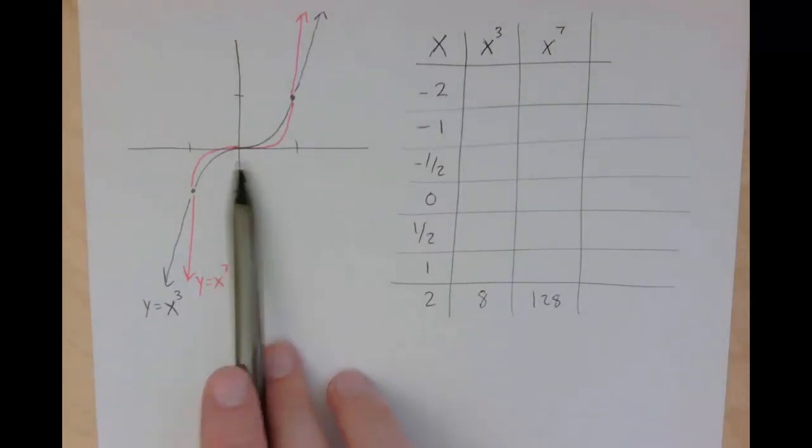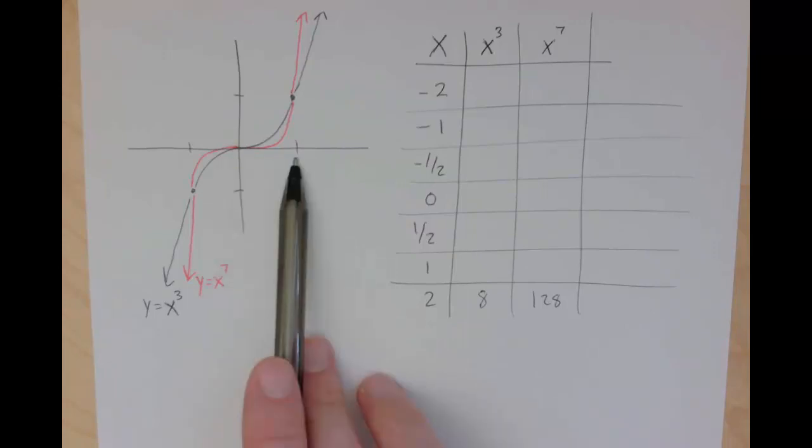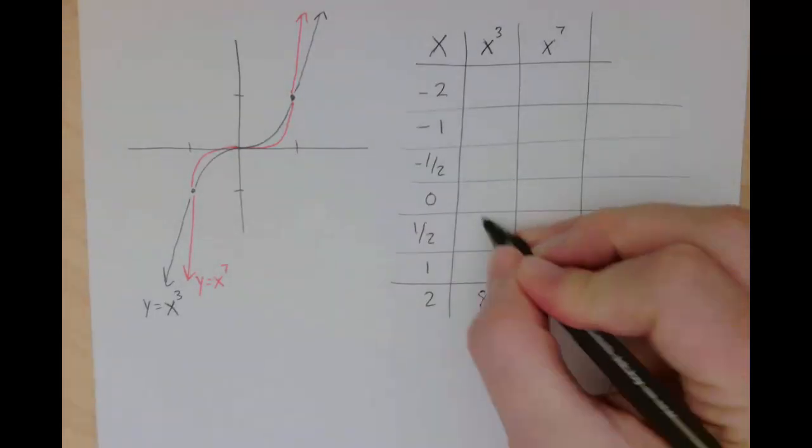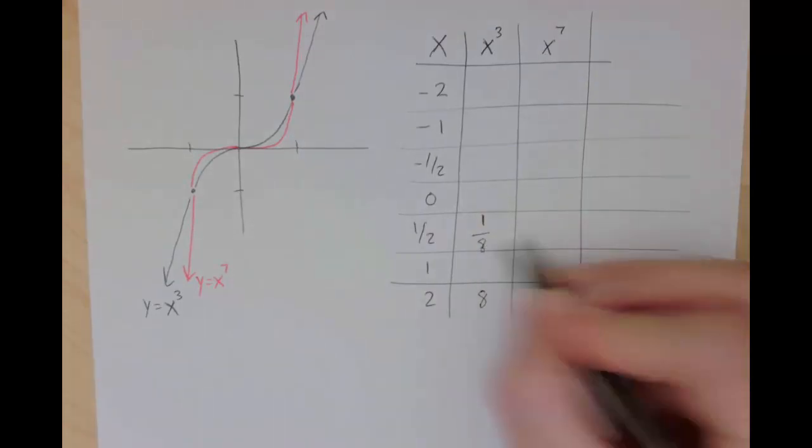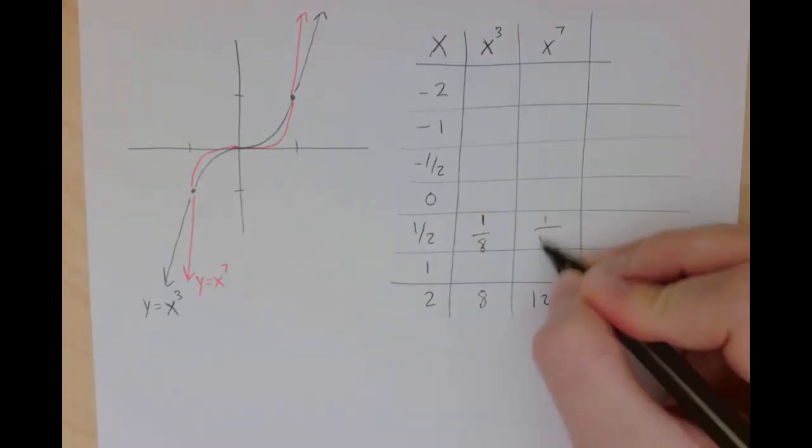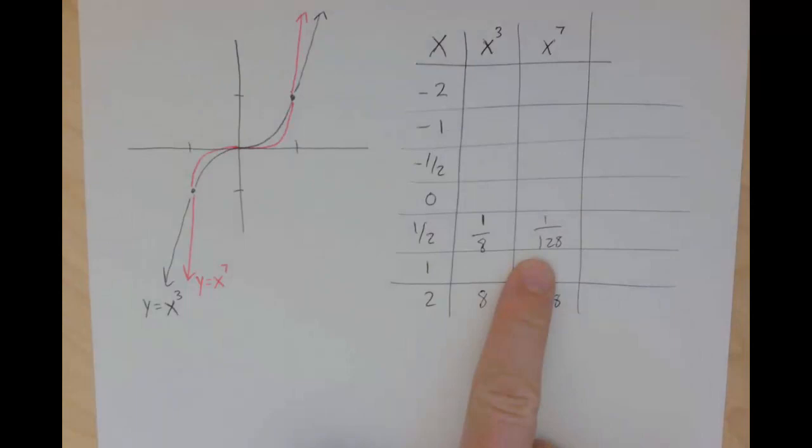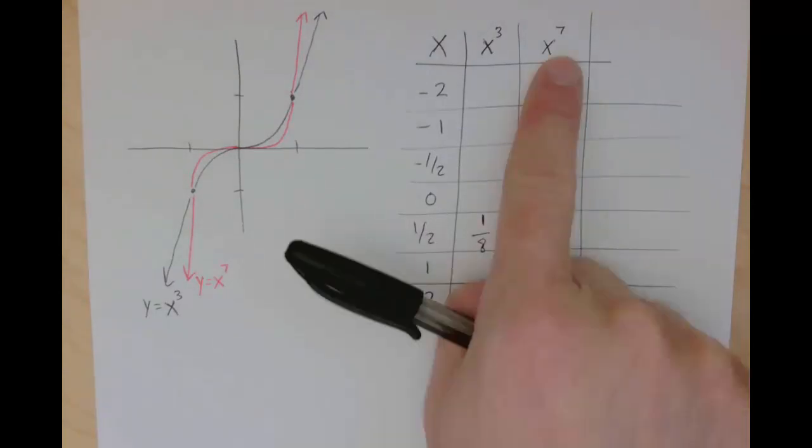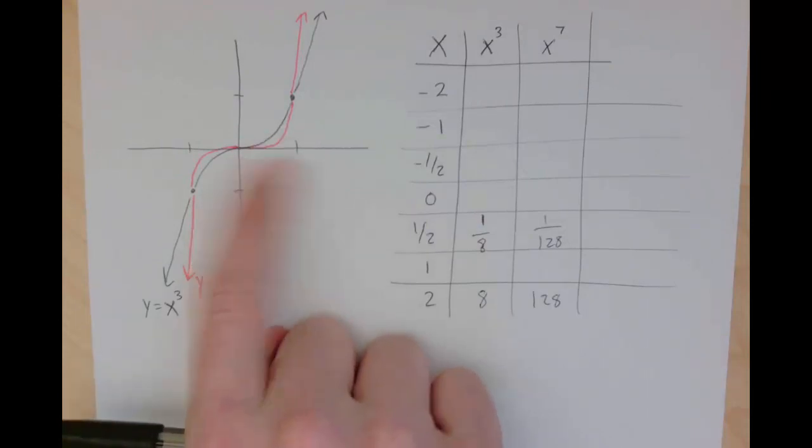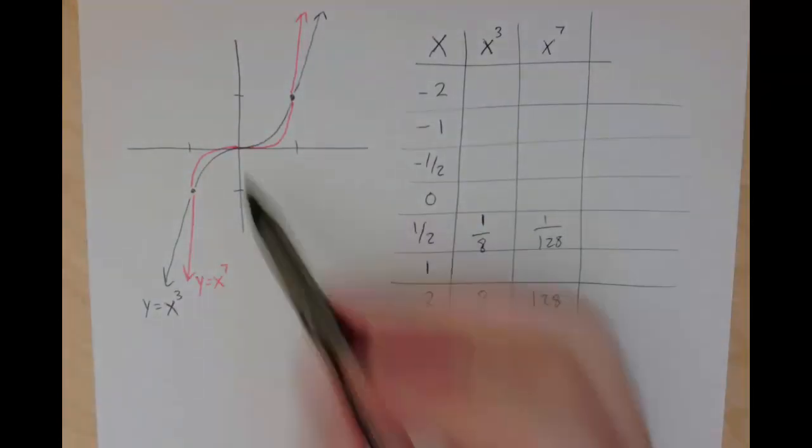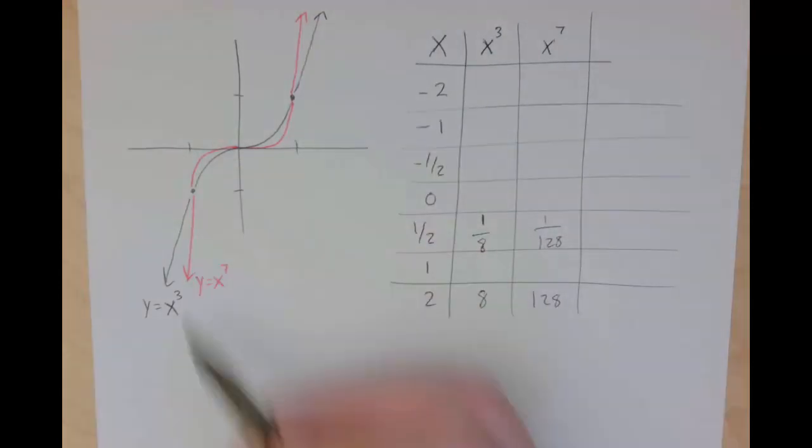But just like we talked about last time, in the interval between 0 and 1, you have the opposite happening. 1 half to the 3rd power is 1 eighth, 1 half to the 7th power is 1 over 128, and that's a much smaller number. So just like last time, the larger exponent actually produces outputs that are smaller in the interval between 0 and 1. And so that's why you have this kind of flattening out shape.